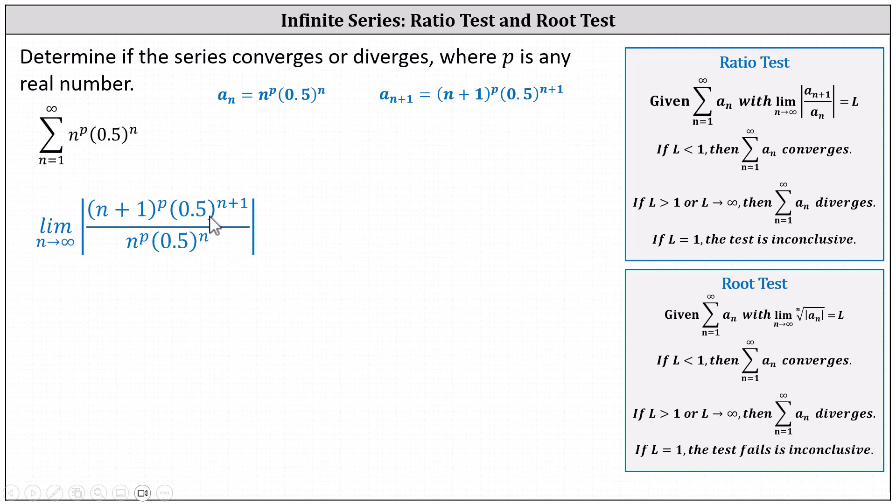Let's focus on the base of 0.5. Remember when dividing and the base is the same, we subtract the exponents. 0.5 to the power of n plus 1 divided by 0.5 to the power of n is equal to 0.5.